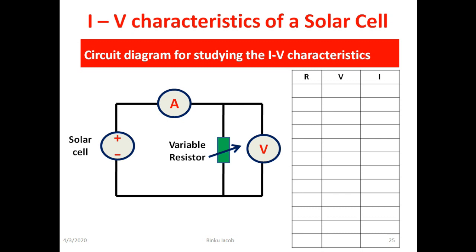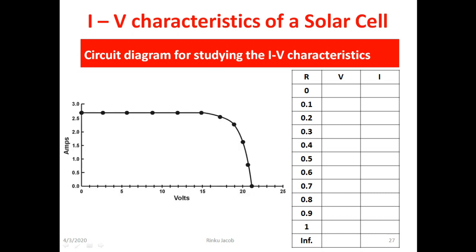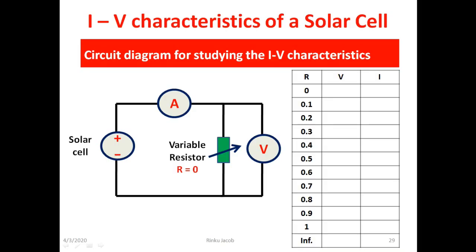This is tabulated in a column as shown here. For a simple example I take the values of resistance to be as 0, 0.1, 0.2, 0.3 up to 1 ohm. And at last an infinite resistance. And suppose we take the corresponding observation for voltage and current. Now when we plot the observed data on a graph with voltage along x-axis and current along y-axis we get a curve as shown in the figure.